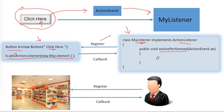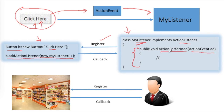We call addActionListener(myListener) on the button object, so the object of the listener class is registered with the button. Whenever the button is clicked, it generates an event and calls the callback function of the registered class. Since MyListener has already registered with the button, the callback function — public void actionPerformed — will be called. The button will call this function and pass the ActionEvent as a parameter. This is a built-in mechanism of Java; when the button is clicked, the actionPerformed method of the registered class is automatically called.